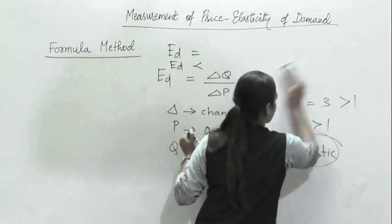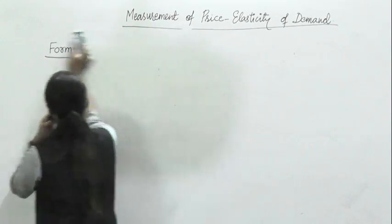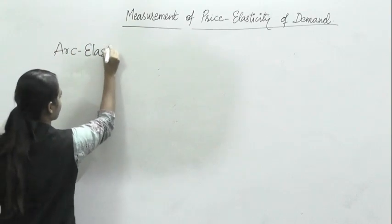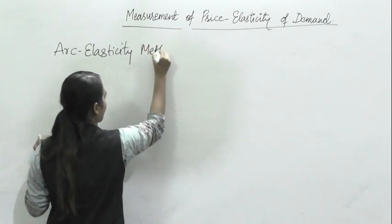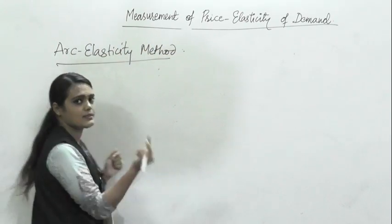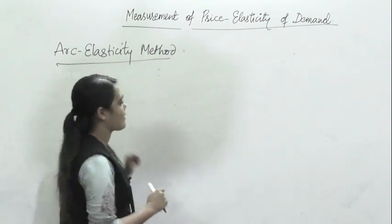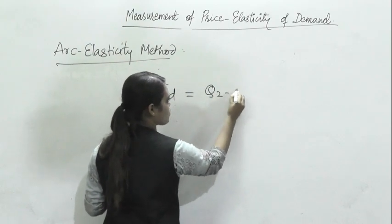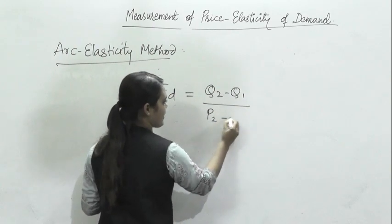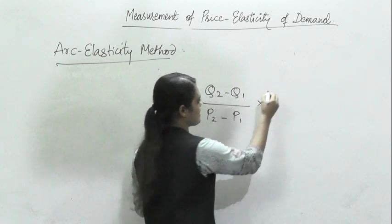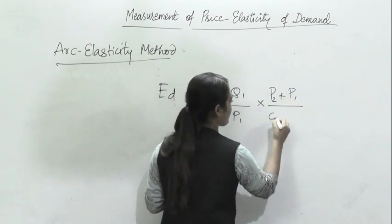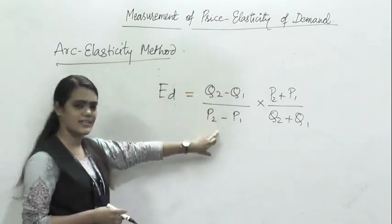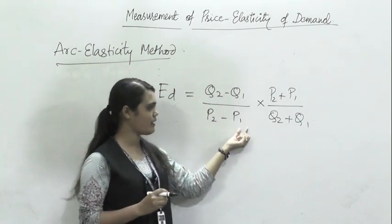The next method of measuring price elasticity is arc elasticity. For those appearing for CA and CS foundation, this method is very prominent in your syllabus. The arc elasticity formula is: Ed = (Q2 − Q1) / (P2 − P1) × (P2 + P1) / (Q2 + Q1). P2 is your new price and P1 is your original price.